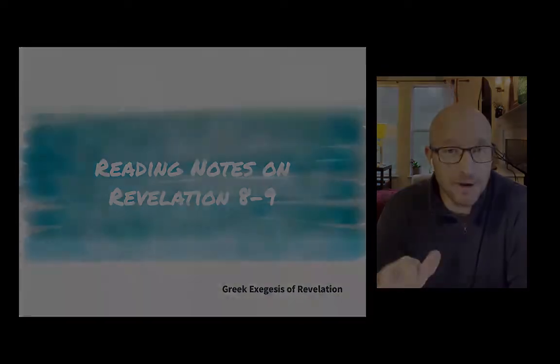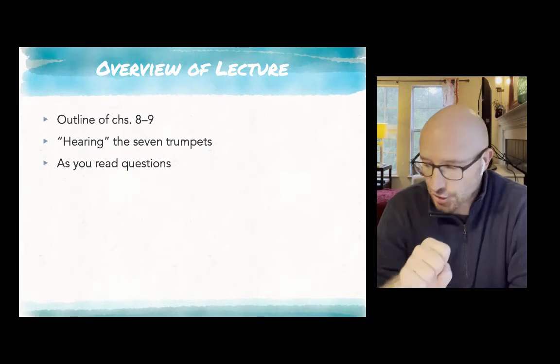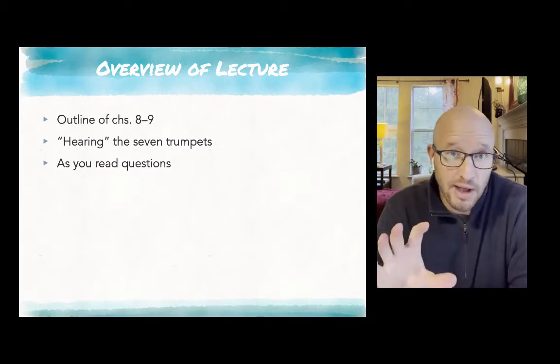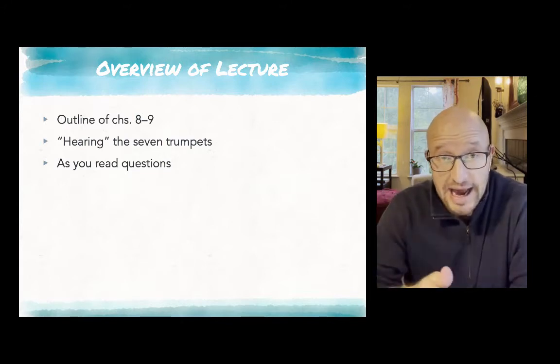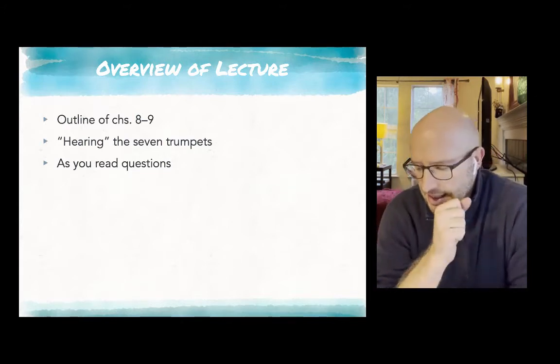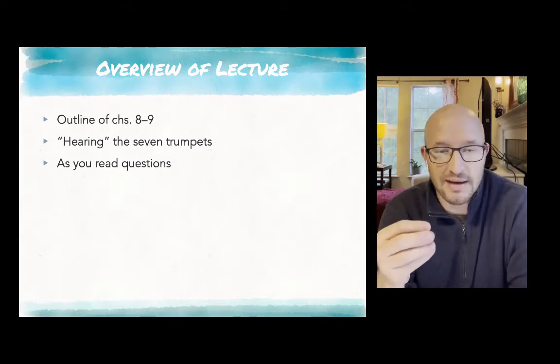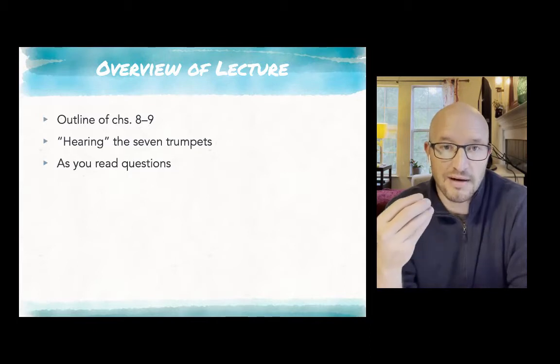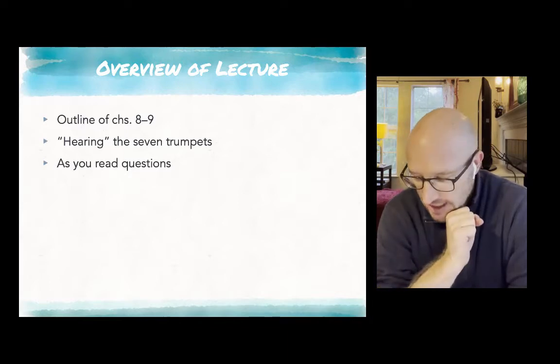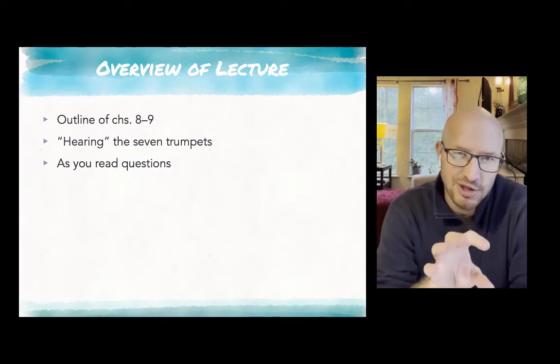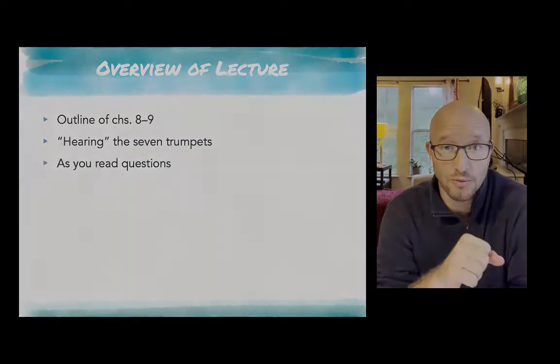What I want to do in this brief and hopefully relatively easy lecture is provide an outline of chapters 8 and 9, an idea of how we might understand what is going on and how the author is moving from scene to scene. I want then to talk through the opening scene in the heavenly throne room and then talk through the six trumpet sounds that we are reading in chapters 8 and 9. Then I'll provide some questions and notes about how you might engage this in your own personal reading.